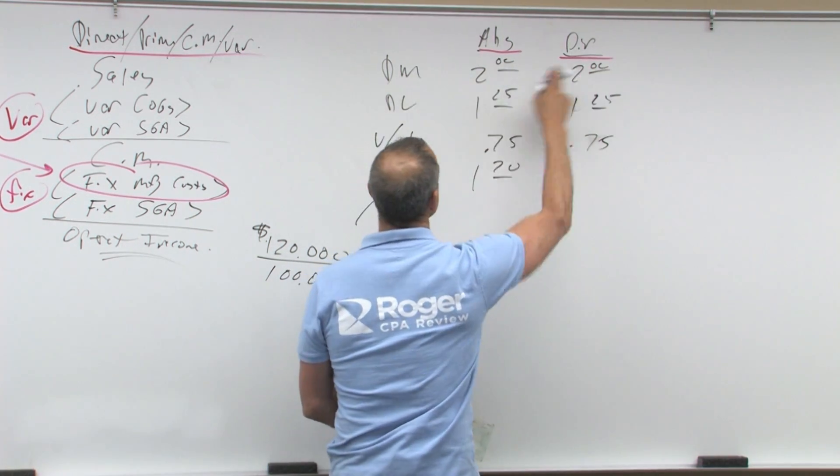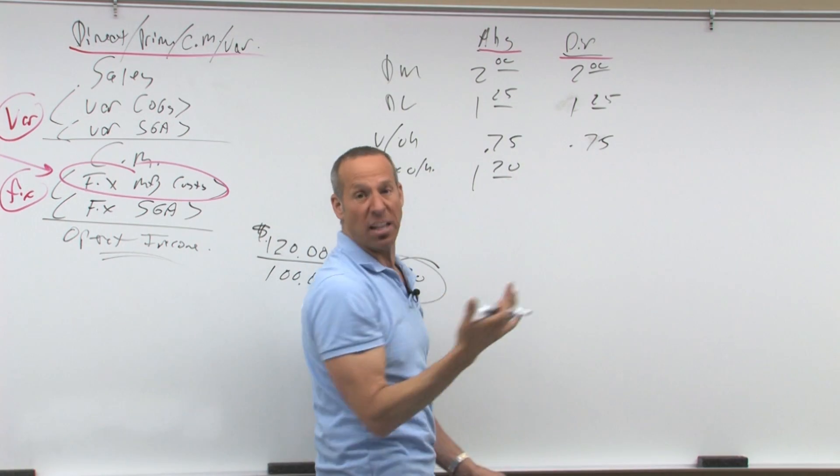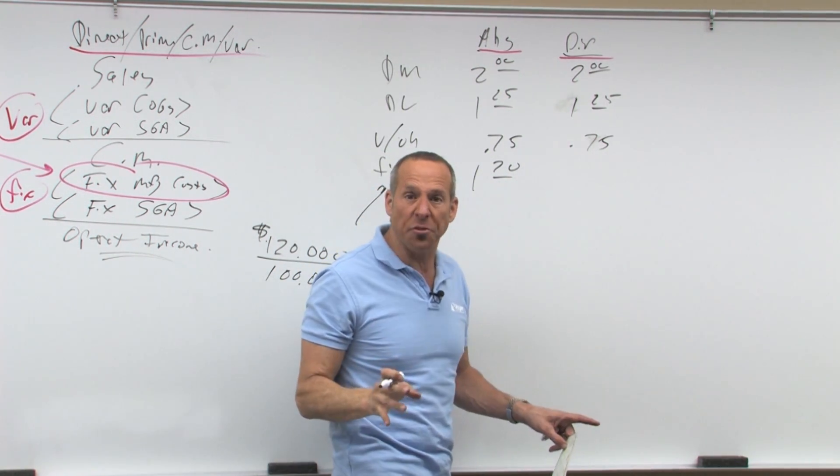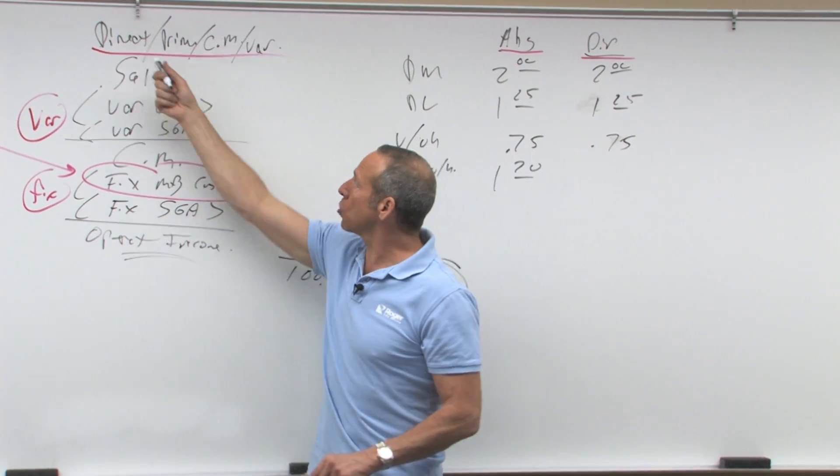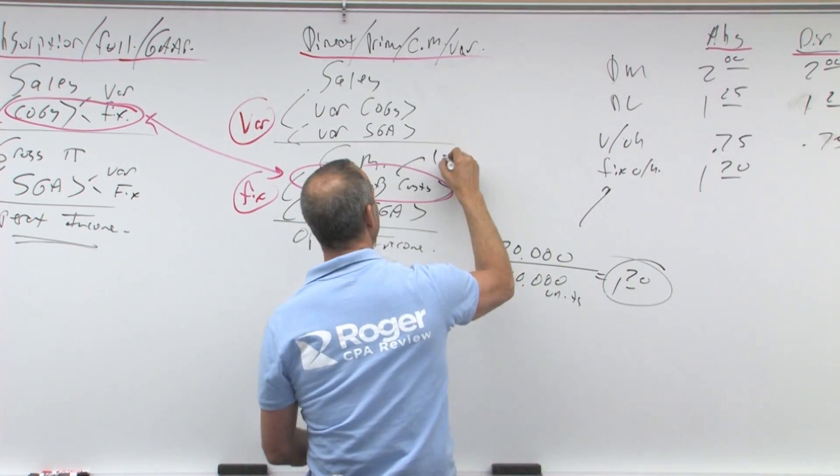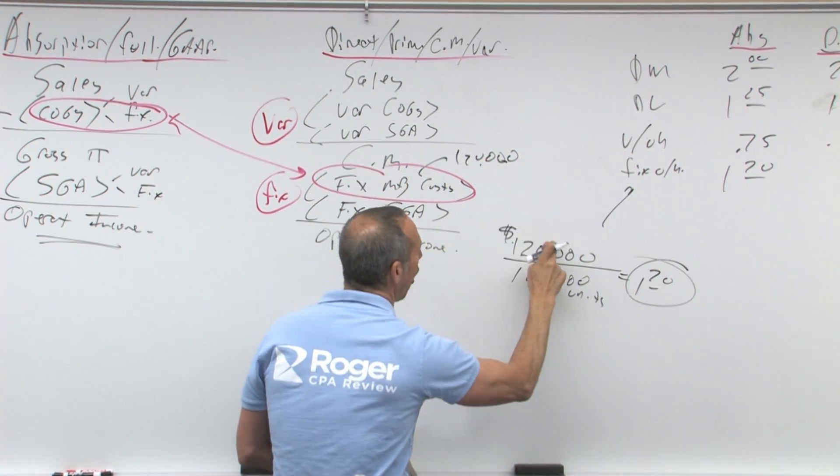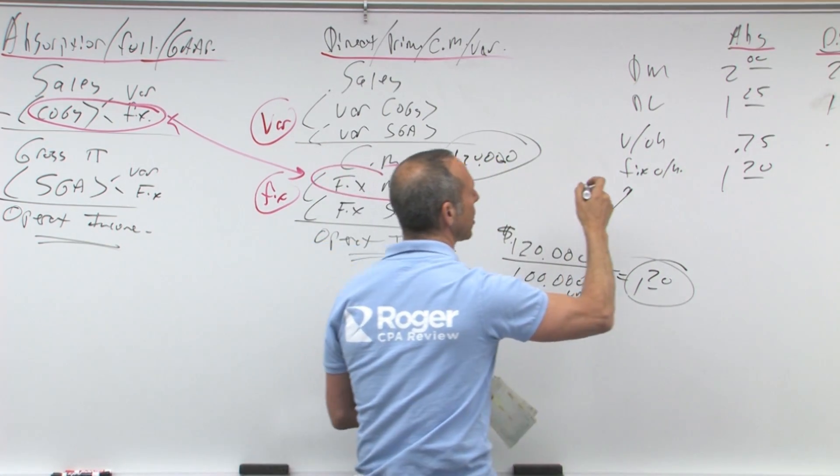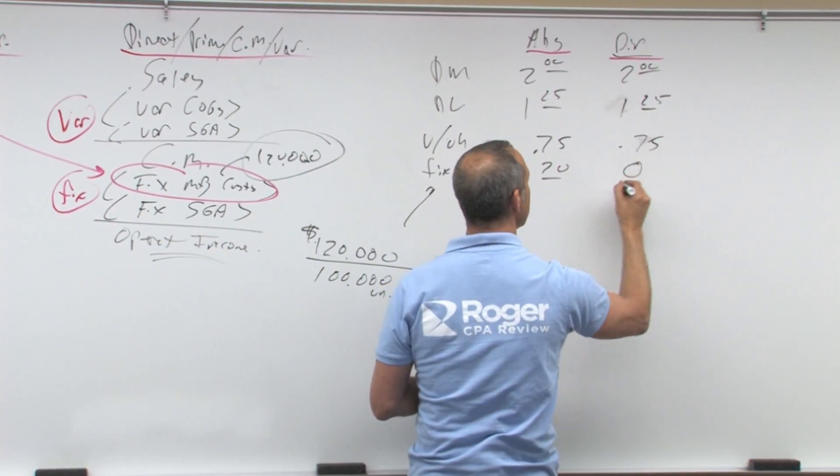What are variable? Material is variable. Labor, variable. Variable overhead is variable. What about fixed overhead? Fixed is a sunk cost. So as far as direct prime contribution are here, what they're going to do here is they're going to expense all $120,000. All $120,000 gets expensed. So over here, how much gets inventoried? None of it.